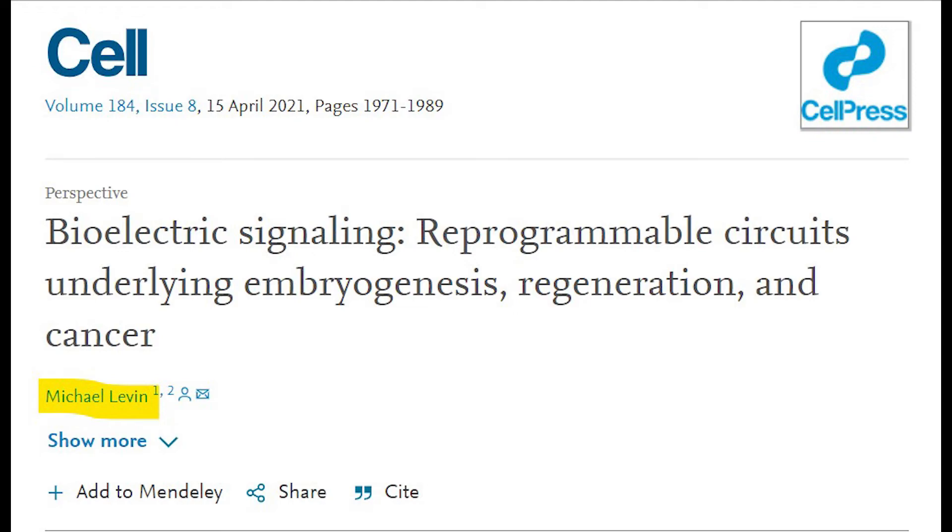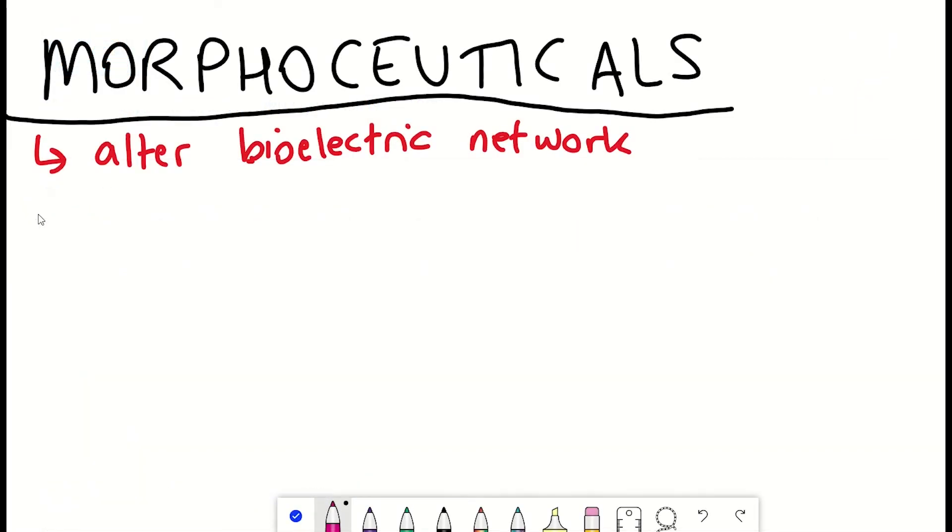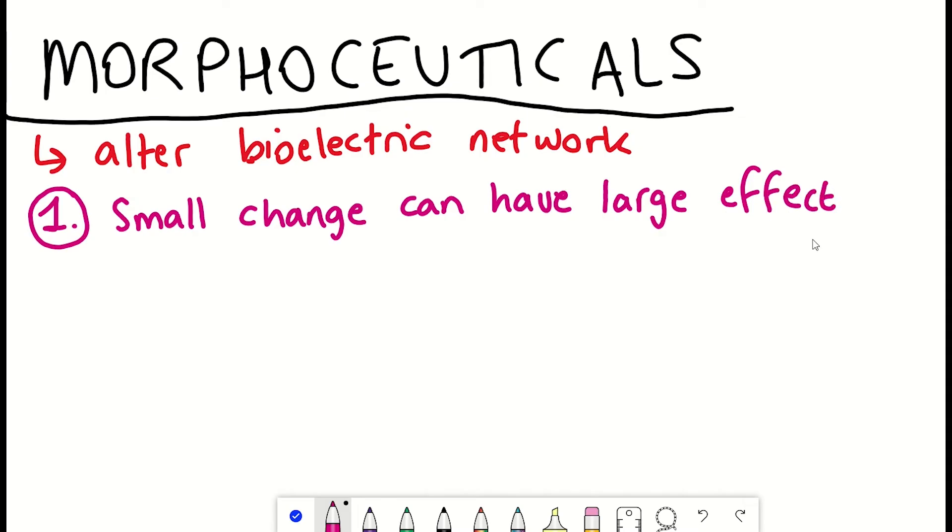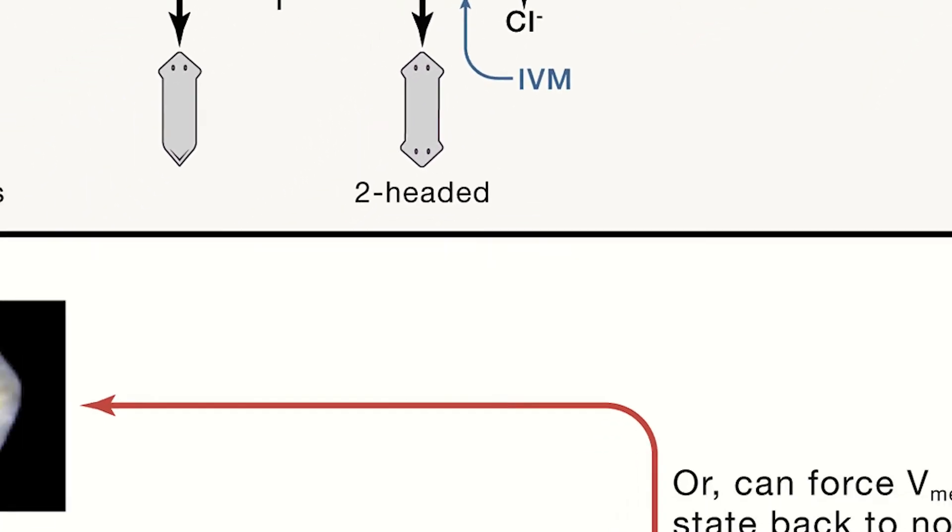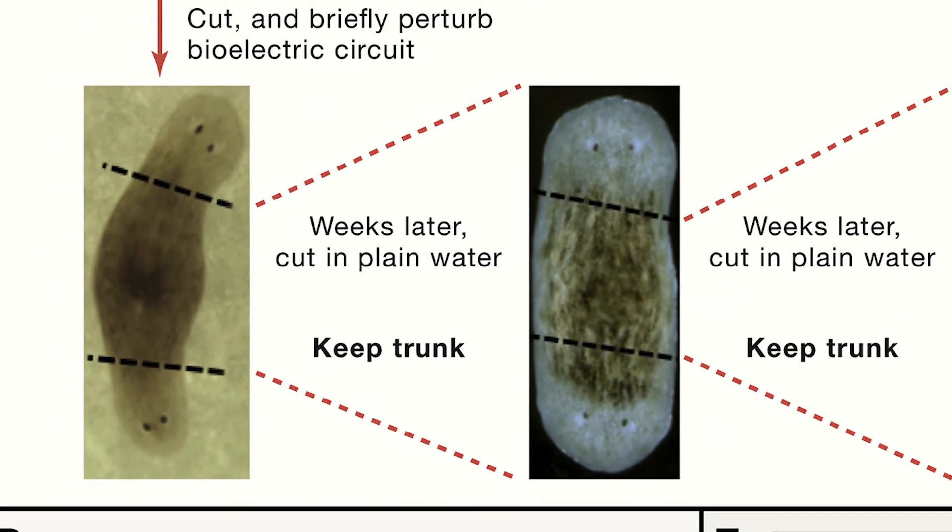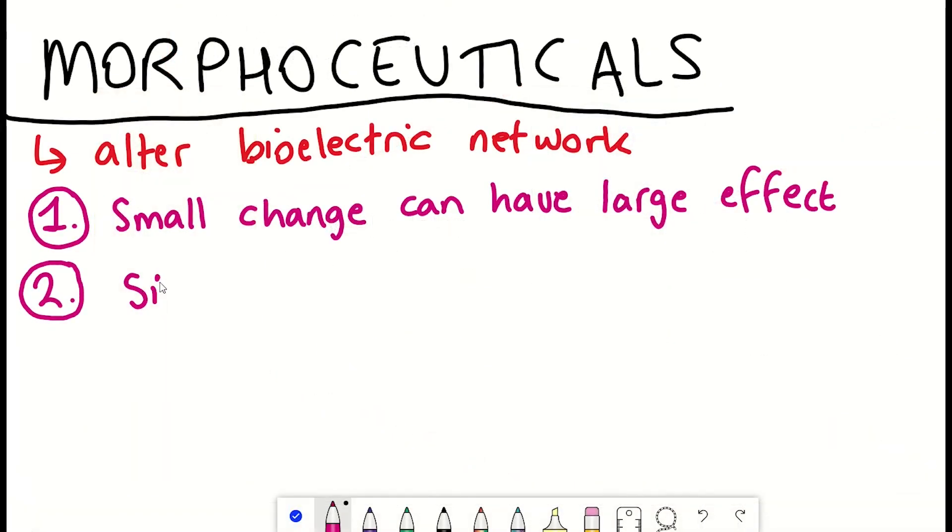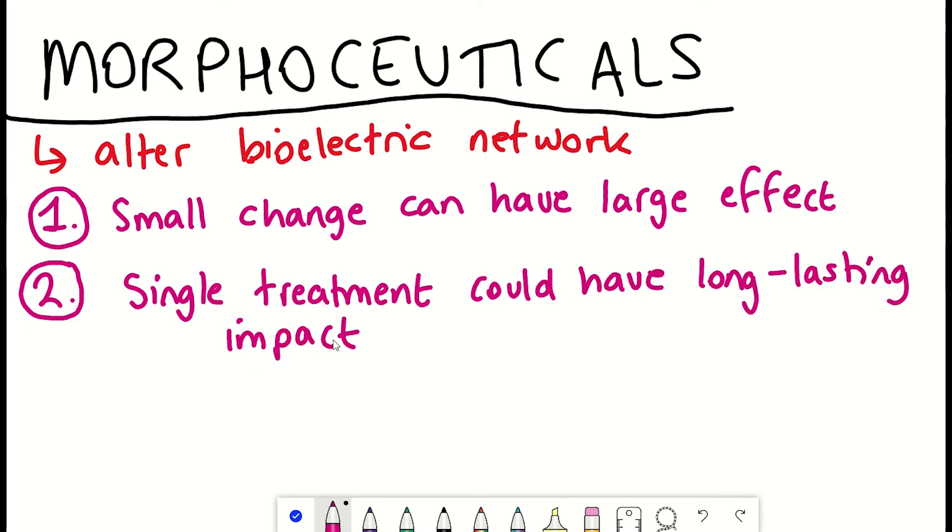And as stated in this review, there are four attractive reasons why intervening in bioelectric states could be valuable for the design of therapeutics. Firstly, as we've seen, small changes in this network can have a large effect in morphogenesis. So in other words, you can trigger large-scale changes in growth and form without having to micromanage individual details. Secondly, it may act as an early decision-making switch that selects downstream morphogenetic programs. In other words, the idea that single treatment could have prolonged influences over the growth of the organism.